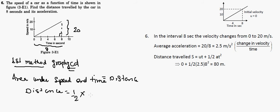Half base into height is the area of triangle. Base is eight and the height is 20, so half base into height. This will be 80 meter as a distance.